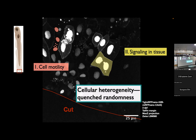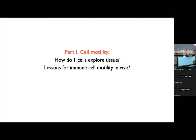One of the things that I think we've started learning empirically about this system is that in general there's really a lot of noise in the sense that cells are quite heterogeneous. It's interesting to think about how these sorts of random variables might perhaps influence the responses that we see. What I mainly wanted to tell you about is a story about simply how T cells explore tissue.